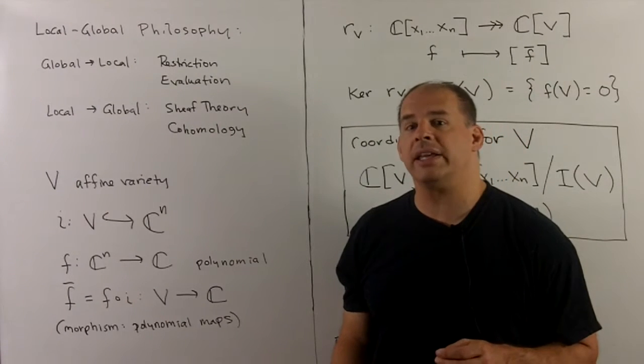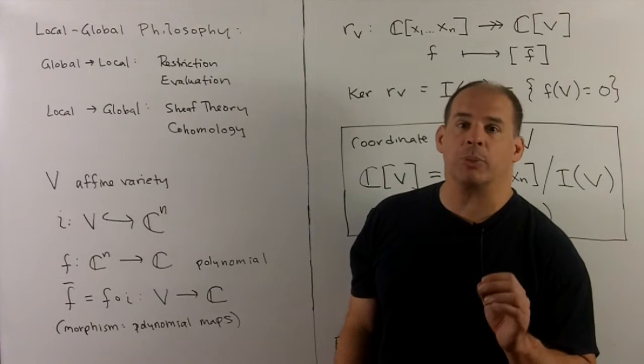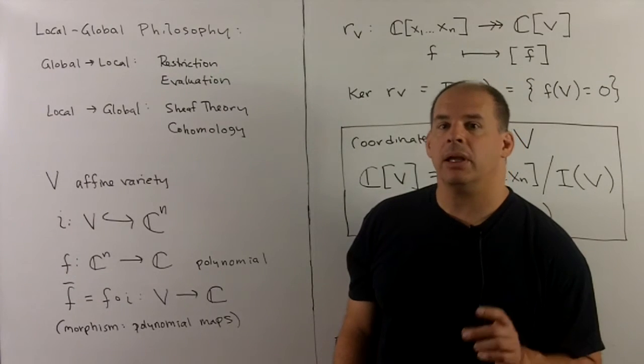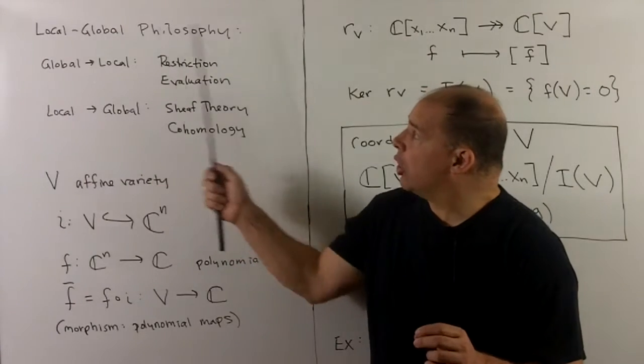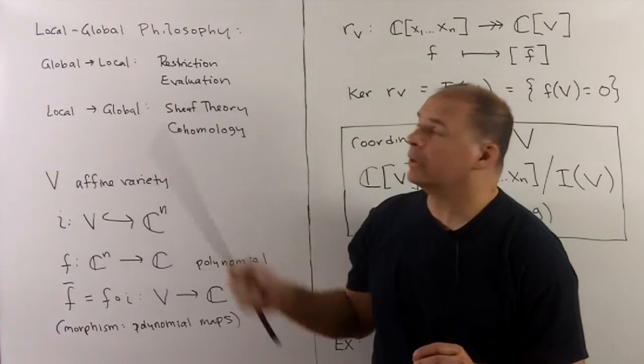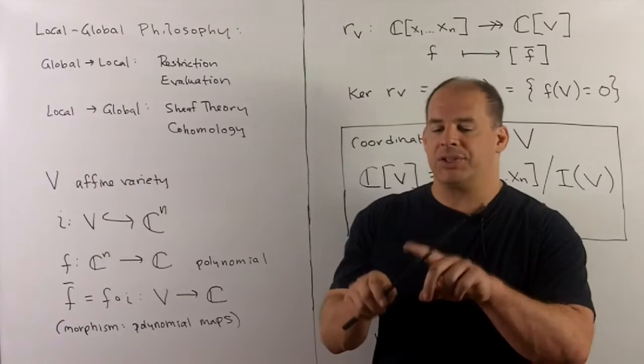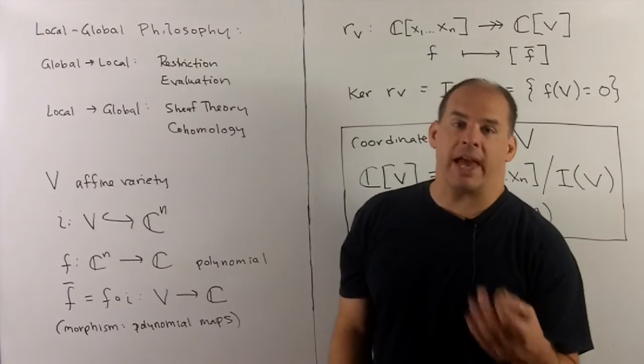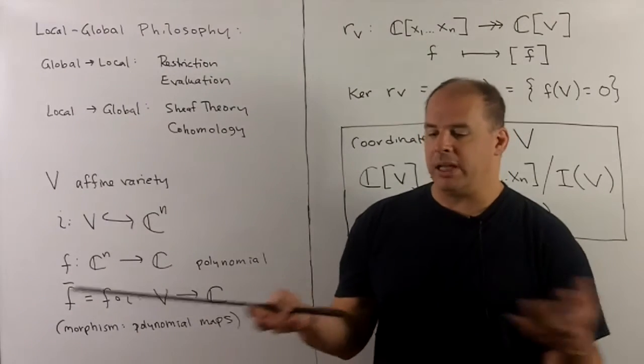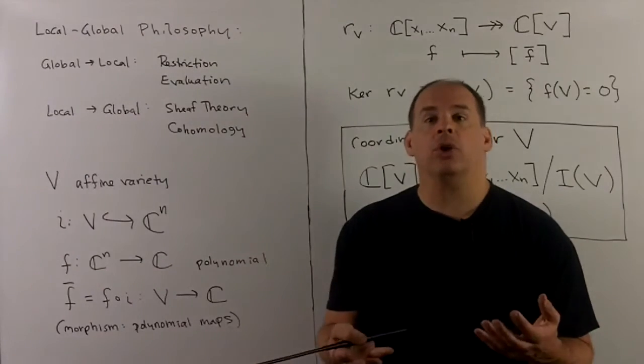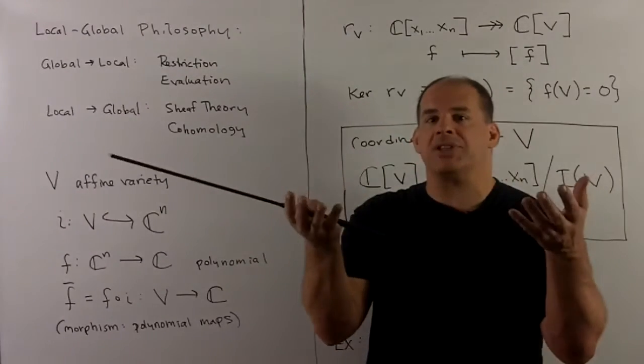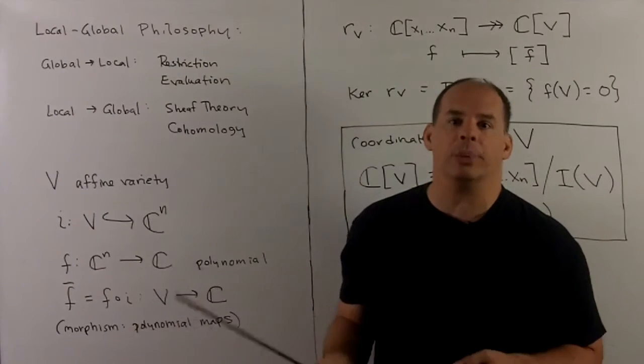Before we continue with toric varieties, let's return to basic algebraic geometry. Now a running theme in algebraic geometry is the local-global philosophy. So typically what we'll have is some big space X. X has a topology, then there's going to be a collection of open sets in X, and we're interested in going from the global, the big space, to the local, which would be your open sets.